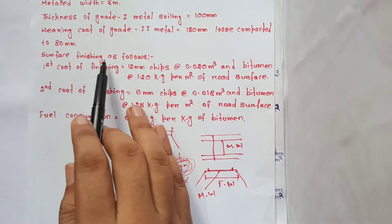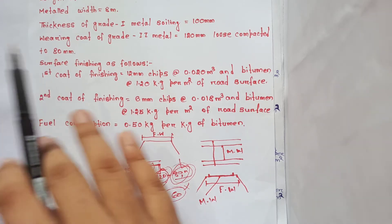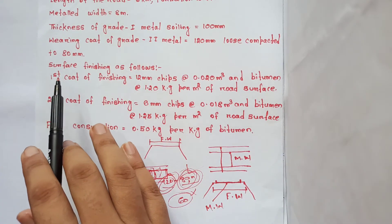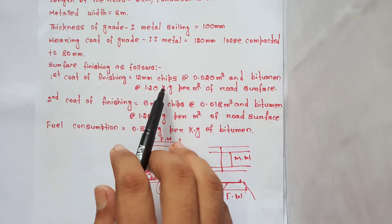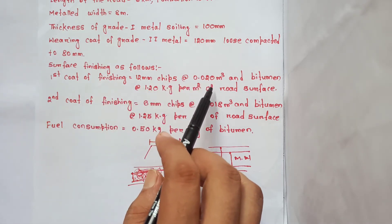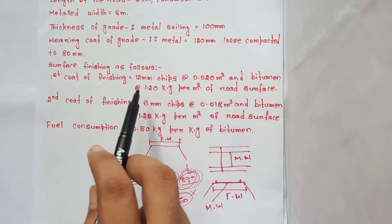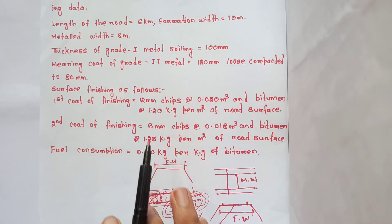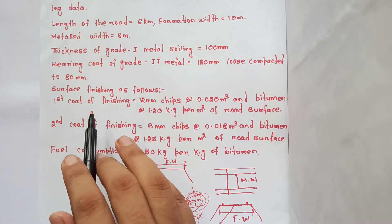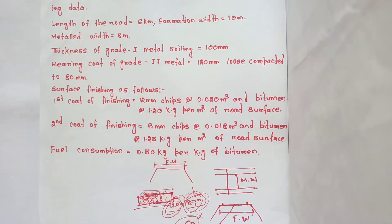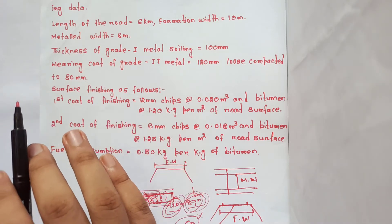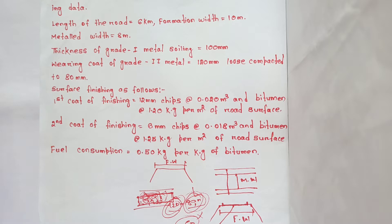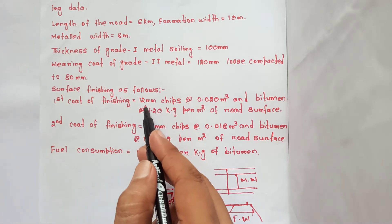Surface finishing is as follows. First coat of finishing: 12 mm chip size, 0.020 m³ per m². This is the chip, this is the grade, this is the soil — this is the main method.